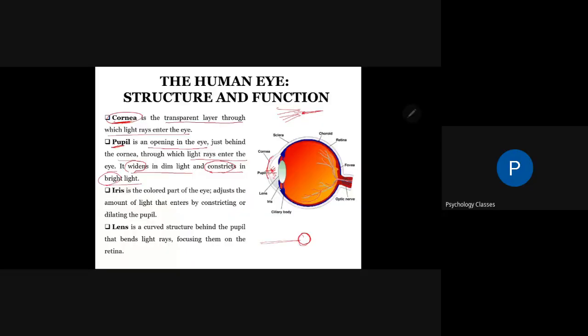Similarly, when there is less light, the pupil will dilate. It will become larger so we can see better in dim light conditions.